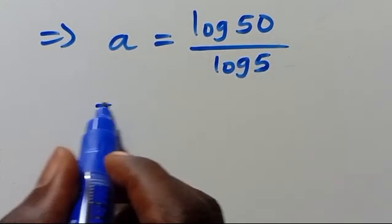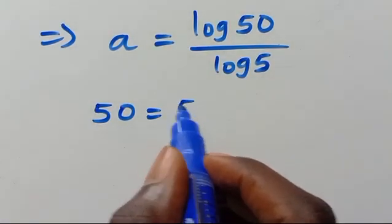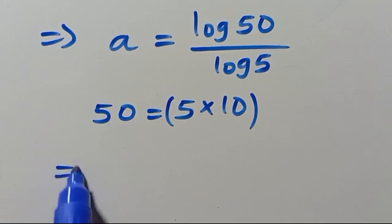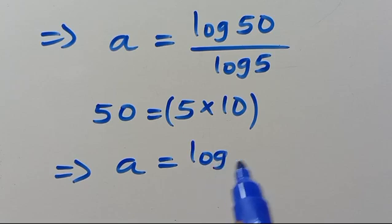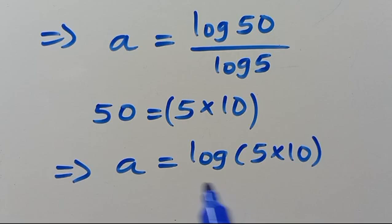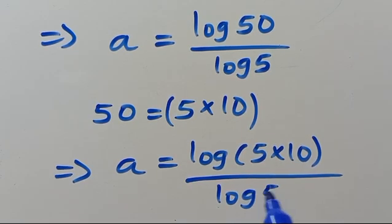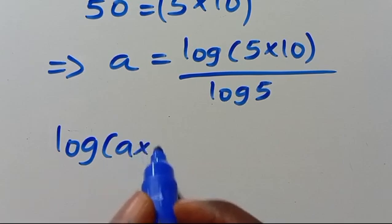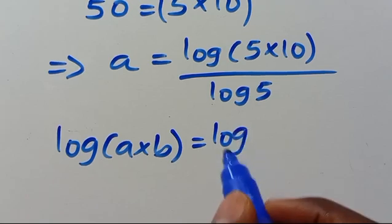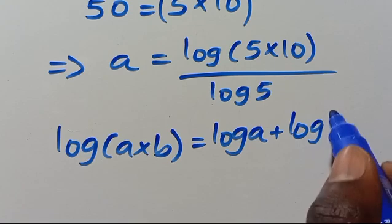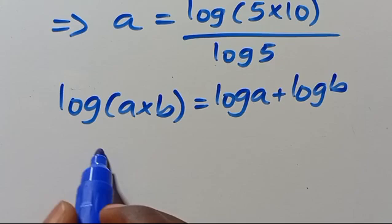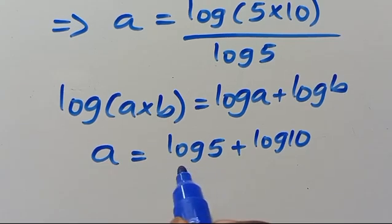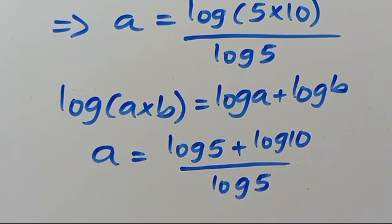So we have log 50. Note that 50 equals 5 times 10. When we substitute, we have A equals log of 5 times 10, over log 5. Recall that log of A times B in parentheses equals log A plus log B. So from here we have A equals log 5 plus log 10, over log 5.